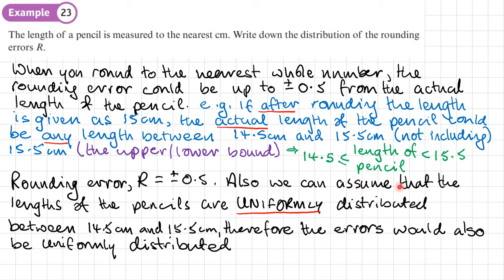Now also we can assume that the lengths of the pencils are uniformly distributed between 14.5 and 15.5 centimeters. Therefore, the rounding errors will also be uniformly distributed. So that gives us this final answer here. The rounding errors are uniformly distributed between the interval of minus 0.5 to plus 0.5. So that's our distribution.